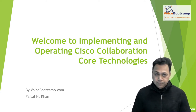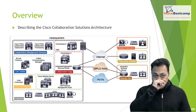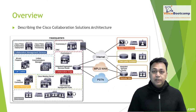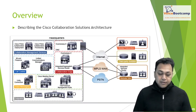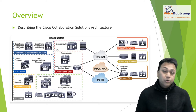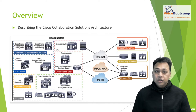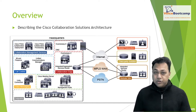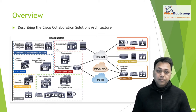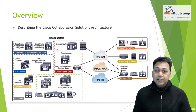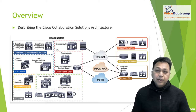One of the first things we're going to look at is the architecture. Here you will see what a Cisco Collaboration solution architecture looks like. In this section you will explore the various aspects of collaboration and the elements necessary to understand, deploy, and manage today's collaboration network. We begin with understanding the architecture.